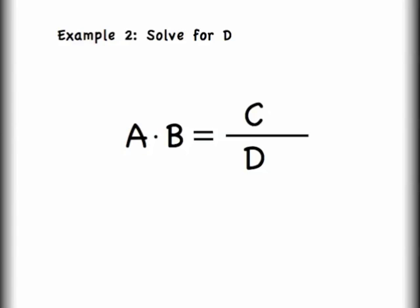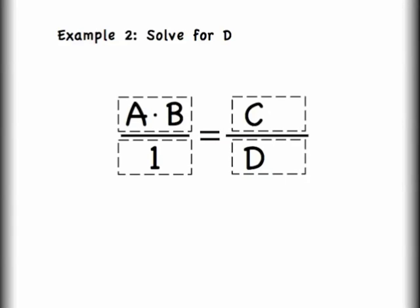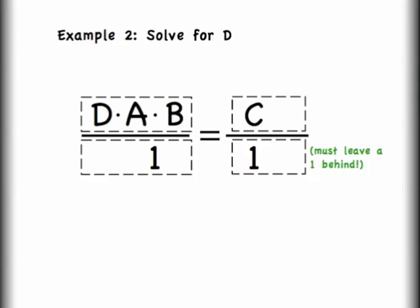Let's look at another example. I'm going to use the same equation, except this time I want to solve for D, which is in the denominator on the right-hand side. Anytime I solve for a variable, I want it to be in a numerator — so that's going to be one of the first steps. I'm still going to put it into the four quadrants so that I can work with my three rules. For the first step, I'm going to move the D diagonally — that's rule three — up to the left. It's going to join the A and the B. When I do this, I must leave behind a one. What you're really doing is factoring out a D — you must still have a one down there so that you maintain your four quadrants.